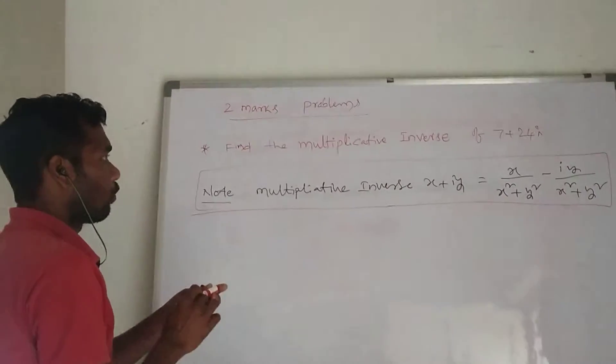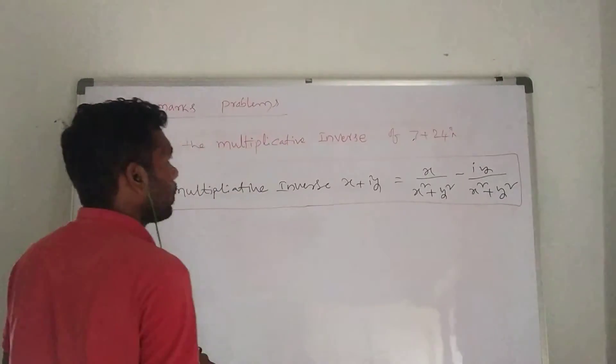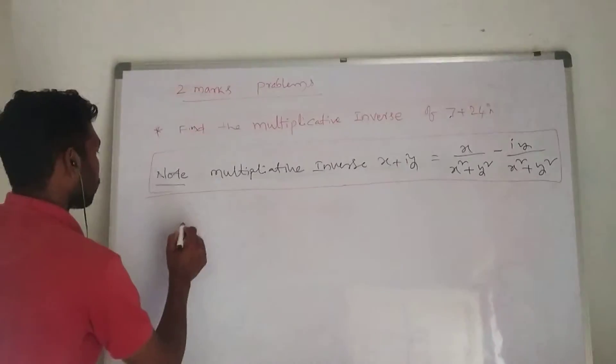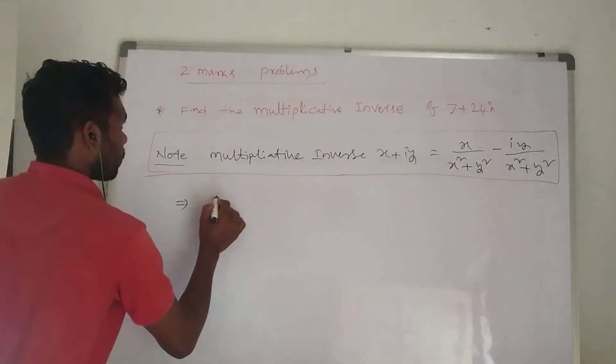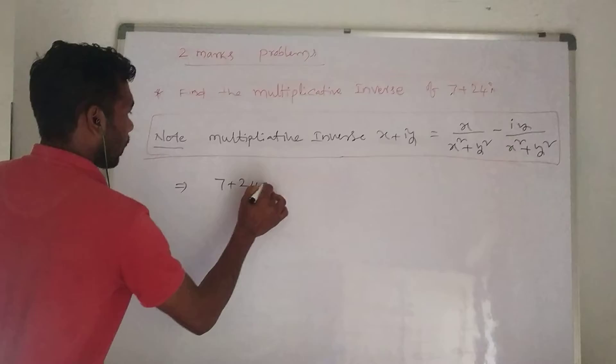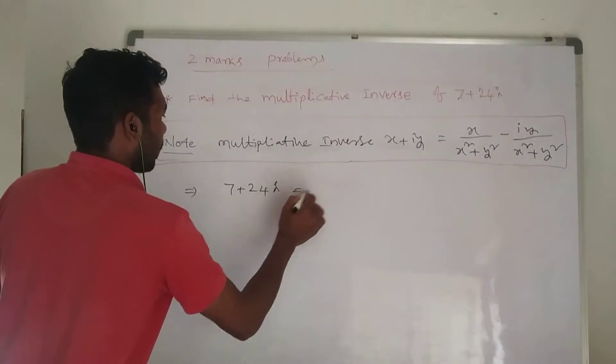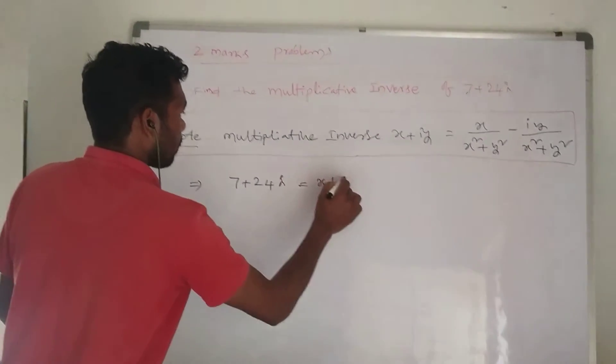Now substitute into the formula. This is x, this is y. The given complex form is 7 plus 24i.